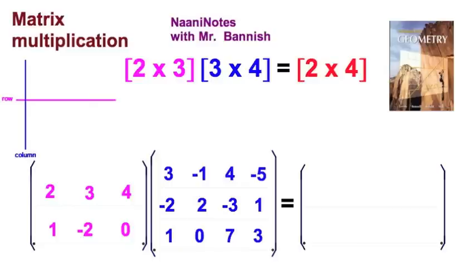We're going to take the first matrix, which is a 2 by 3 matrix. We're going to multiply it by a 3 by 4 matrix. And the product is going to be a 2 by 4 matrix.